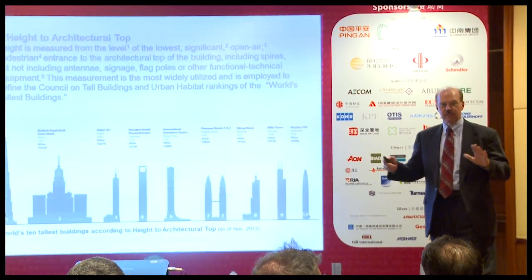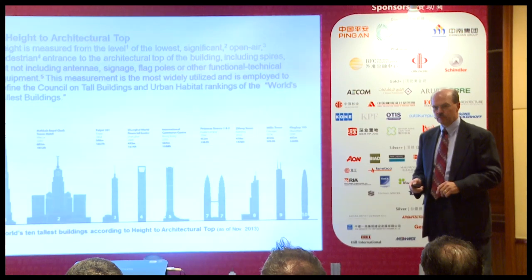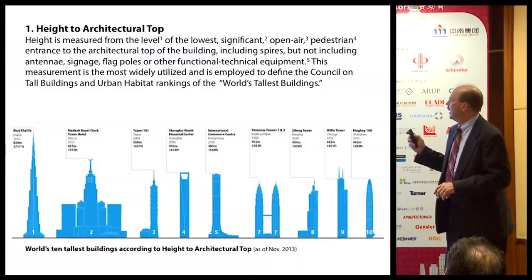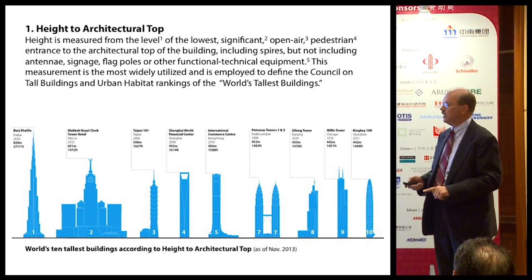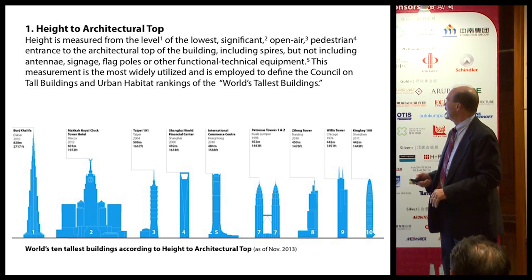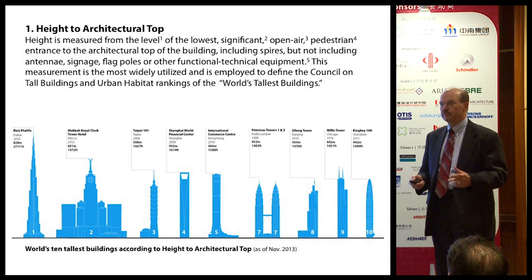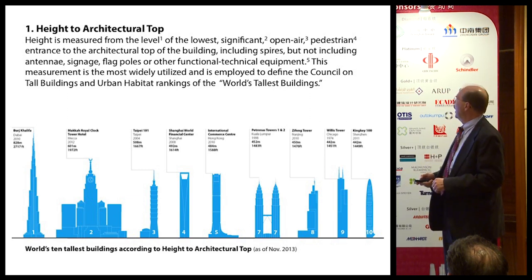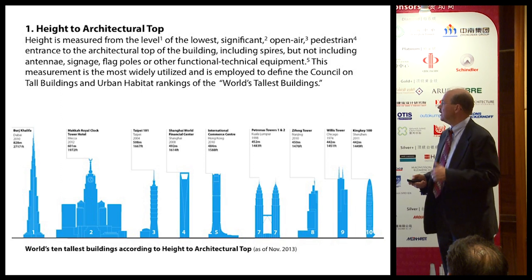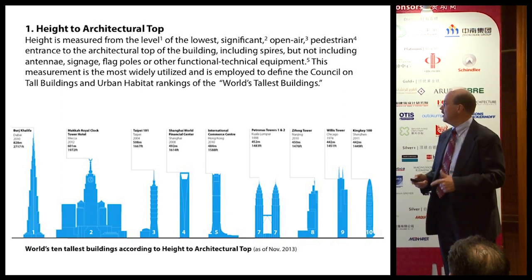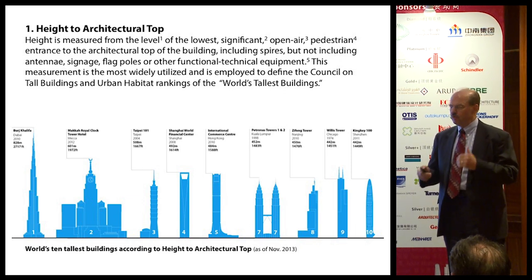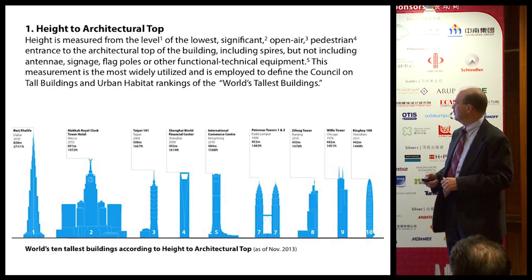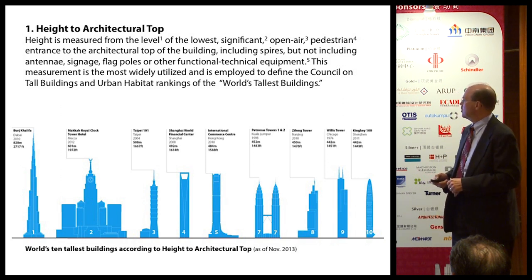Just so that everybody knows where the council stands with respect to measuring height: height to architectural top is measured from the level of the lowest significant open-air pedestrian entrance to the architectural top of the building. The architectural top — the top designed by the architect — includes spires, but it doesn't include functional elements such as antennae, signage, flagpoles, or technical elements. That was the crux of the discussion we'll cover in historical perspective.